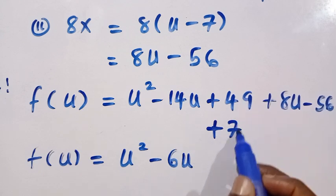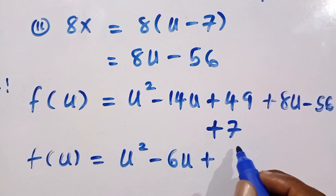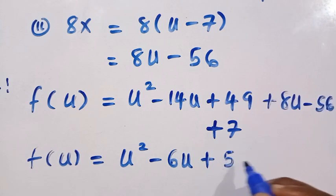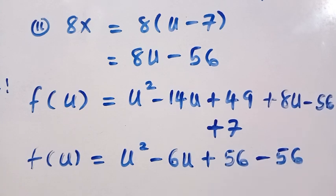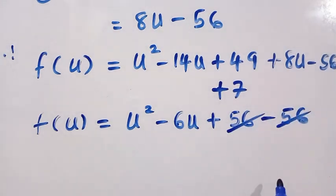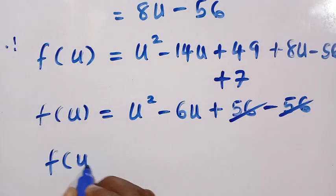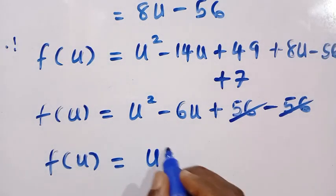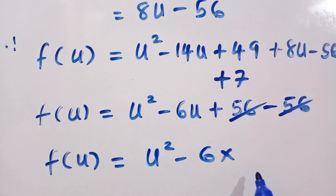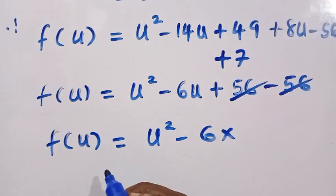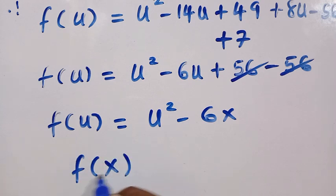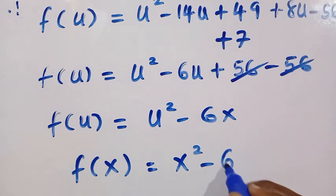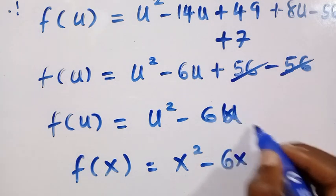So let's add 49 + 7. So 49 + 7 gives us 56 and here is minus 56. So 56 - 56 cancels each other. Therefore, we have f(u) = u² - 6u. Then x and u here are members of real numbers. By just changing u to x, we just have f(x) = x² - 6x.